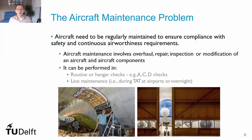To operate their fleet of aircraft, the airline has to regularly maintain those aircraft. They have to ensure compliance with all safety and airworthiness requirements. And to do that, the airline has to perform a set of maintenance activities that require the overhaul, the repair, the inspection, or even modification of the aircraft or aircraft components.